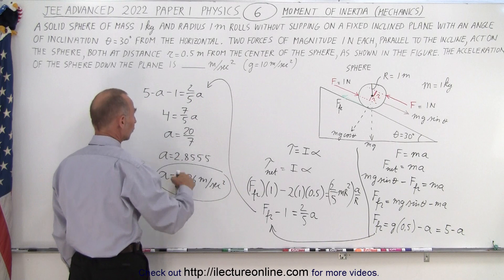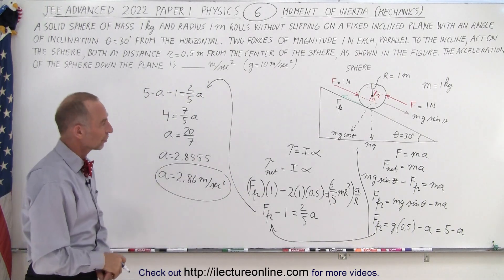or A equals 2.86 meters per second squared. And so, the answer then, when we come up here, it is 2.86 meters per second squared.